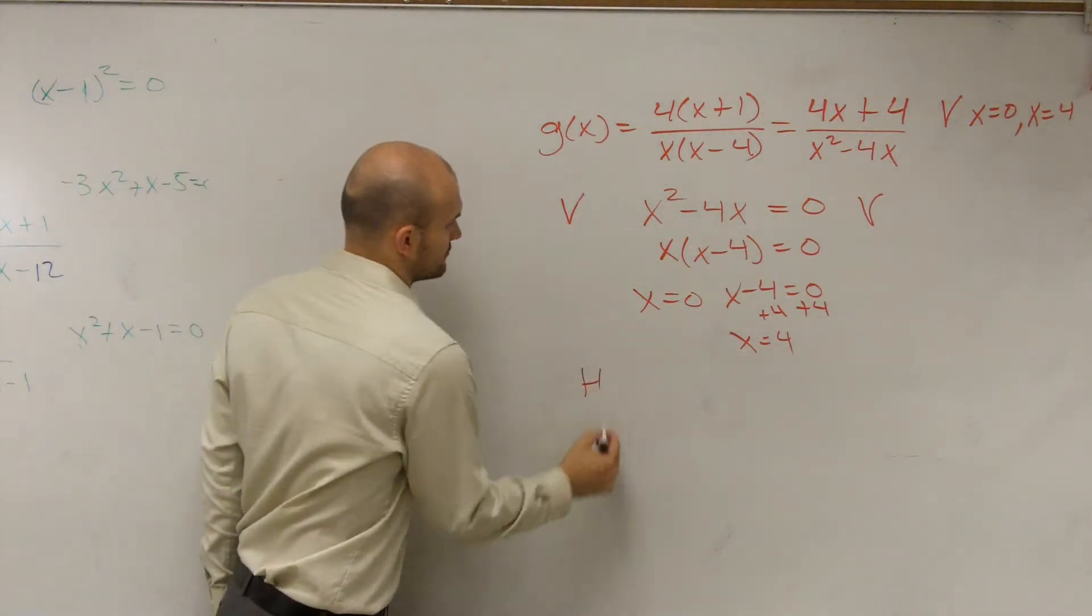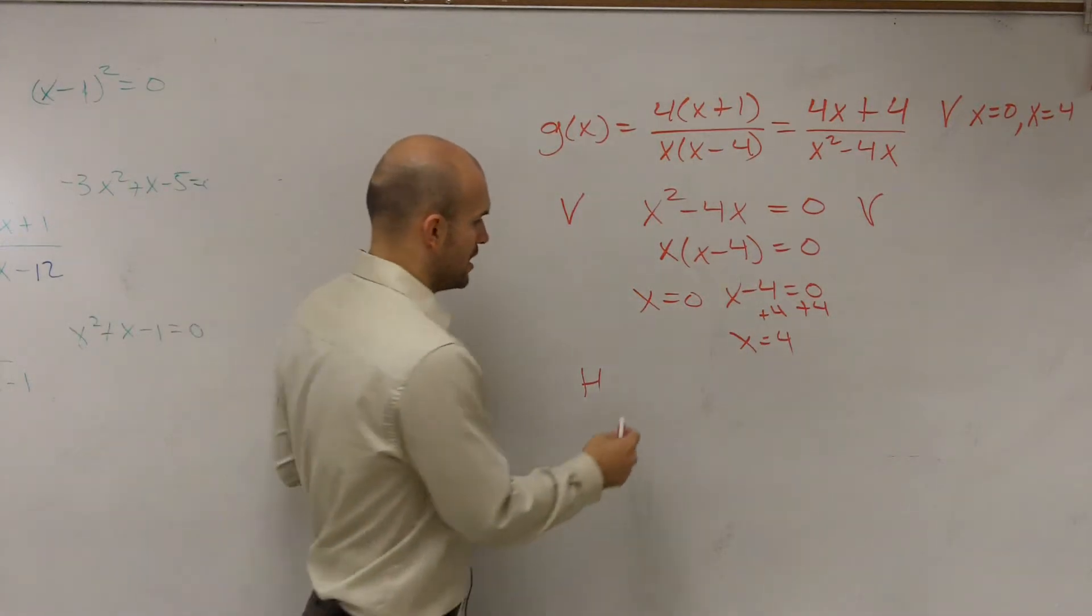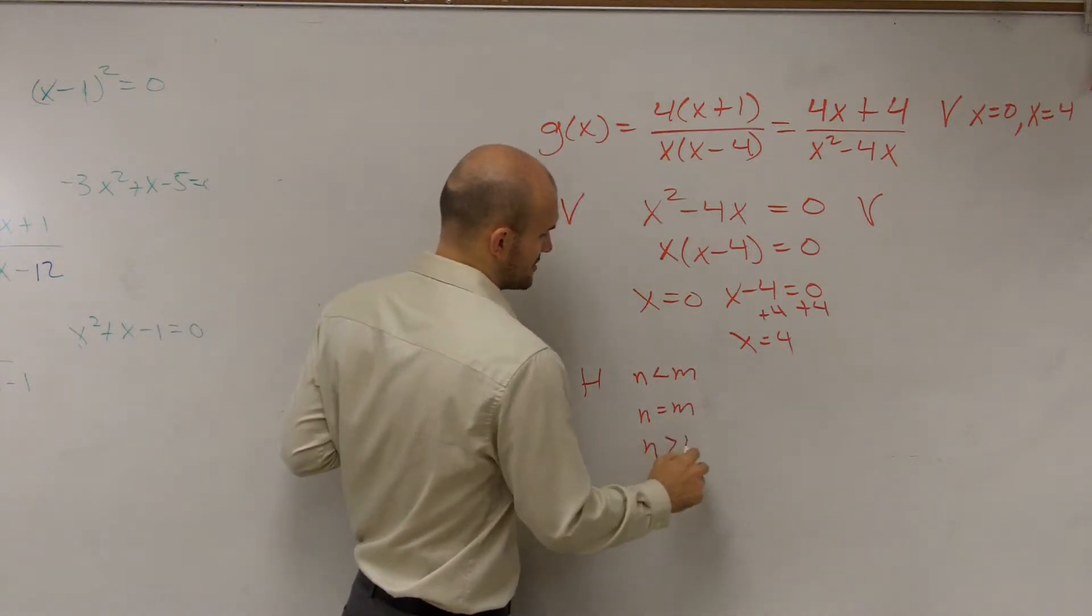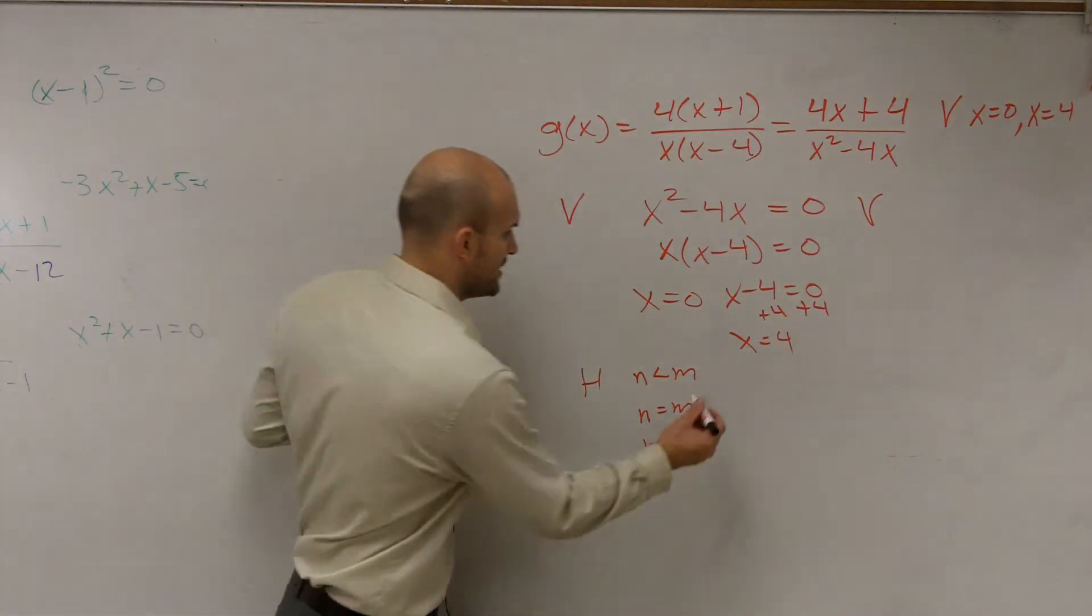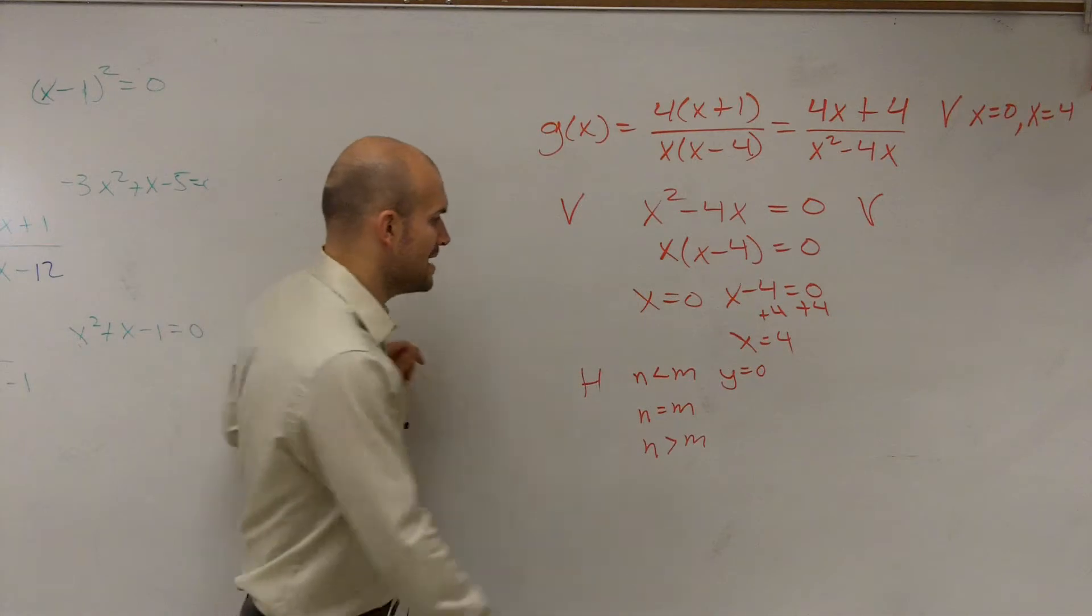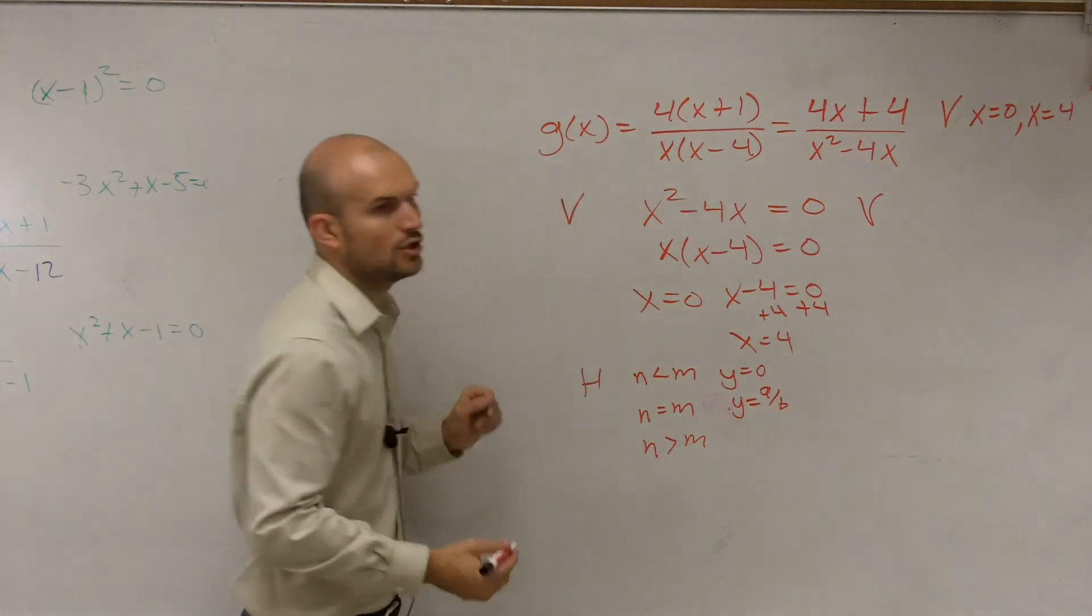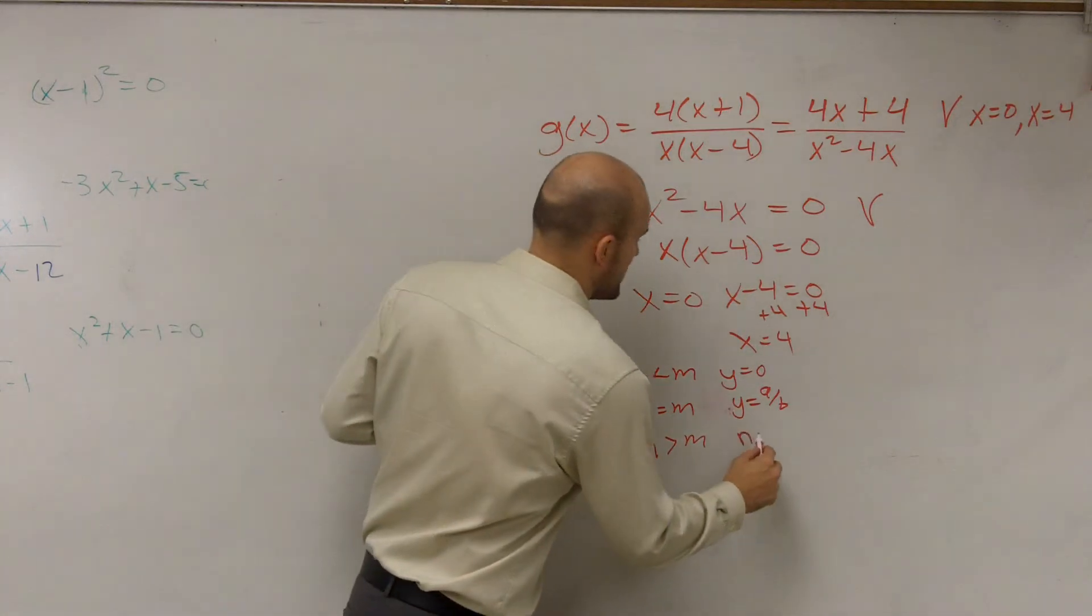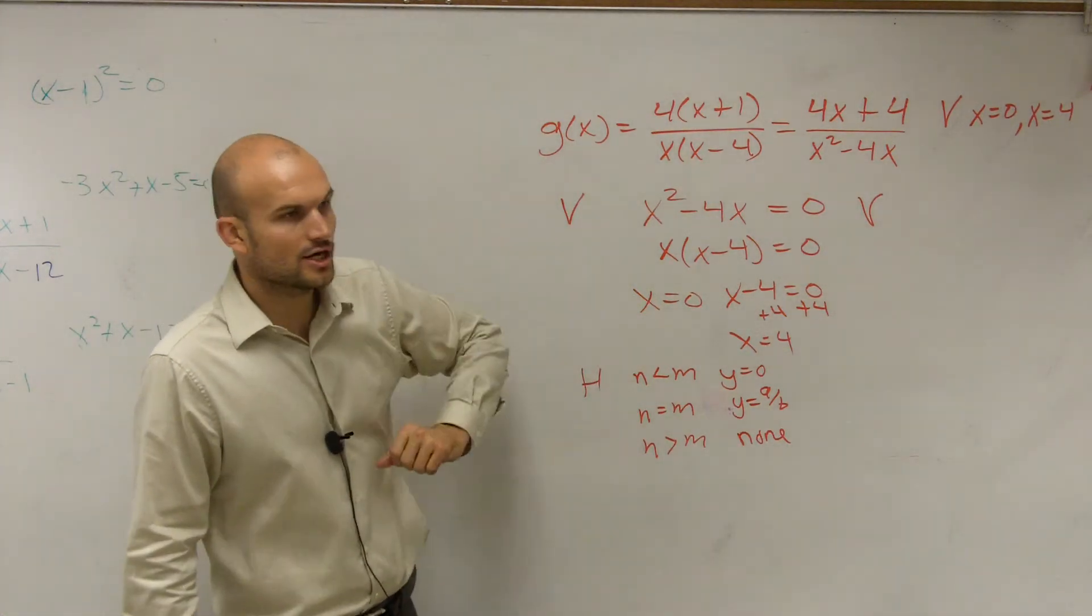Now let's do horizontal. Horizontal, remember, we have that test. If you guys remember looking at the test, we were looking at our degrees. The degree from your numerator, if it's less than m, that means your horizontal asymptote is y equals 0. If your degree in your numerator is equal to the degree in the denominator, then it's y equals the division of their leading coefficients. If your degree in your numerator is greater than the degree in the denominator, you have none. This was in your notes and also in the last video I made for you.